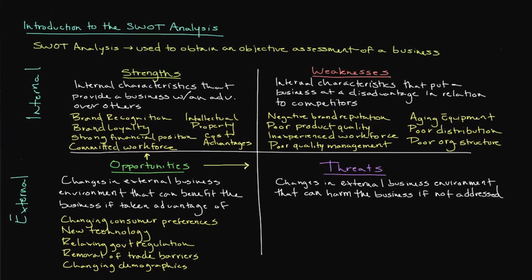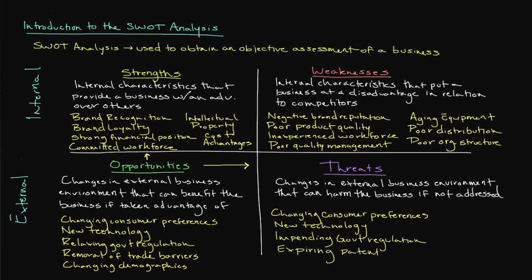Common threats can include changing consumer preferences, new developments in technology, impending government regulation, expiring patents, and even the emergence of new competitors. Expiring patents can be a significant threat to pharmaceutical companies — the possession of valuable patents is certainly a strength, but a patent that is expiring is like blood in the water, attracting competitors who can now sell generic versions of the medication. New government regulation and taxes, another thing that businesses can't directly control, can be a substantial threat as well.